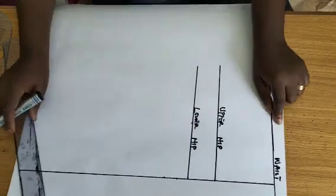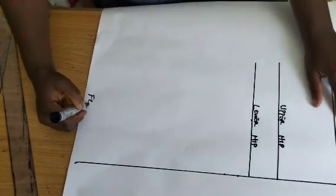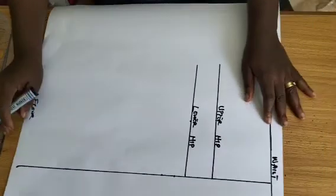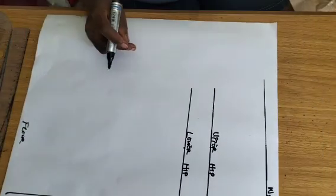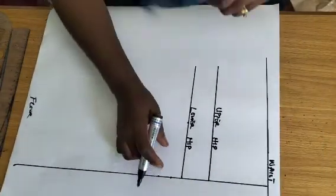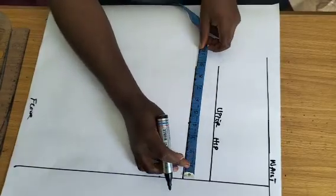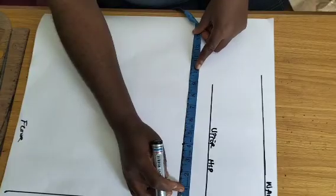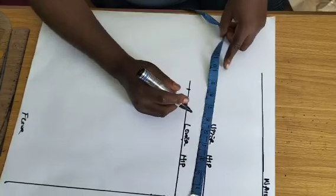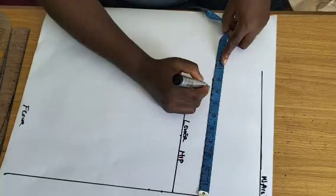This is the waistline and this is the floor level, the floor length of this skirt. From the side to the center front, that is where I'm taking my measurement. From side to center front I'll just take my hip divided by four.